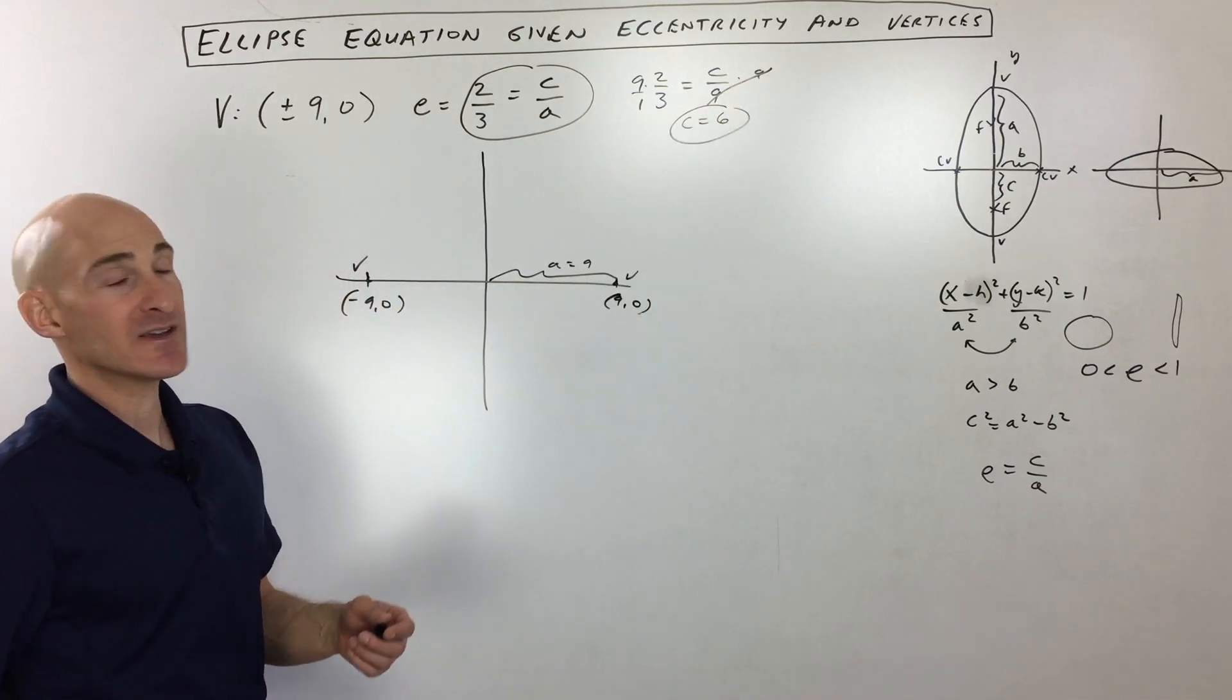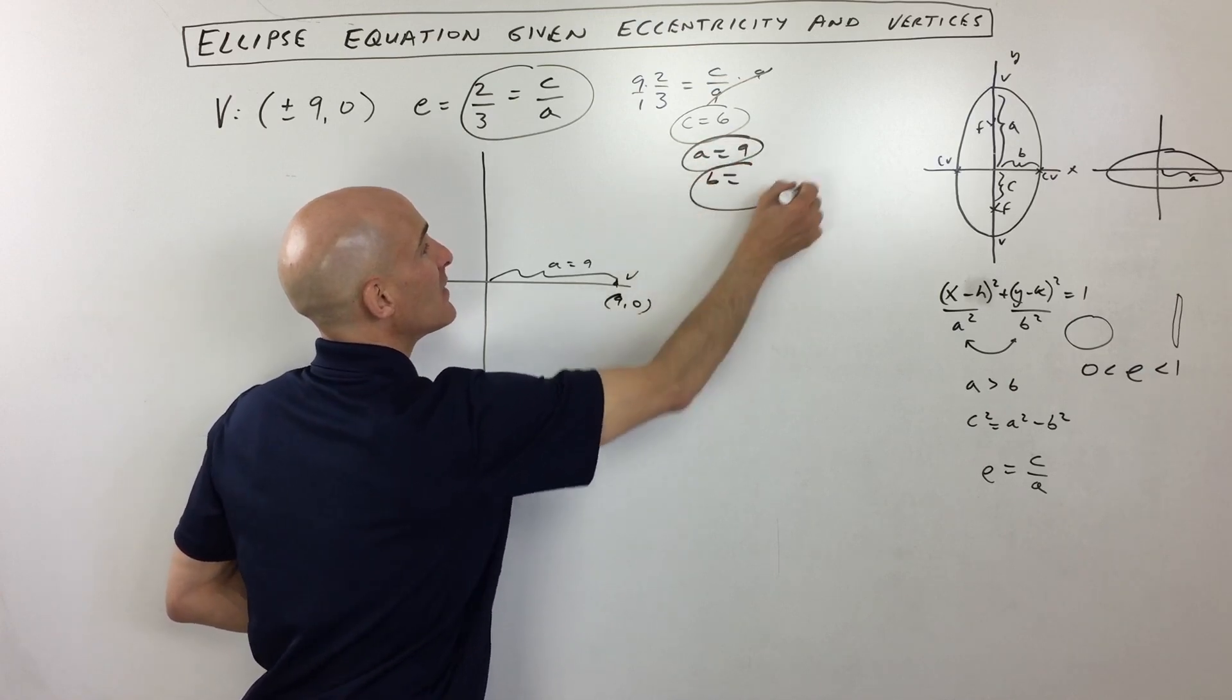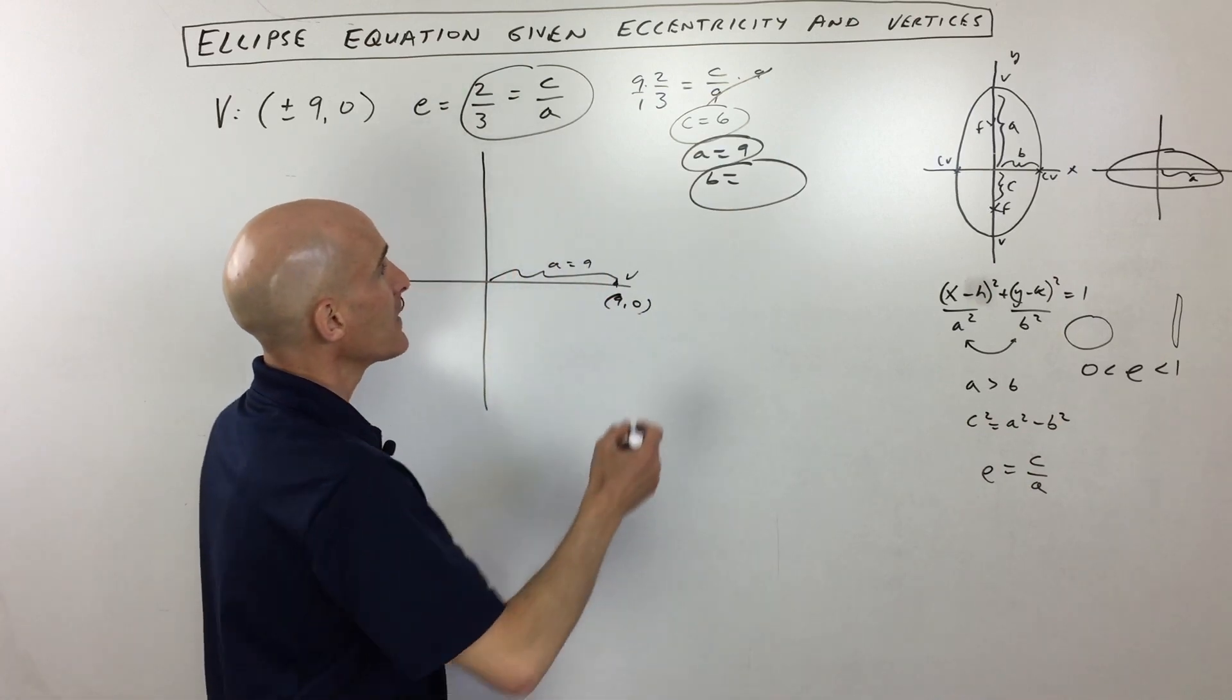So now we know what a is—it's nine. We know what c is—it's six. We can solve for b by using this equation right here: c squared equals a squared minus b squared. So let's go ahead and do that.